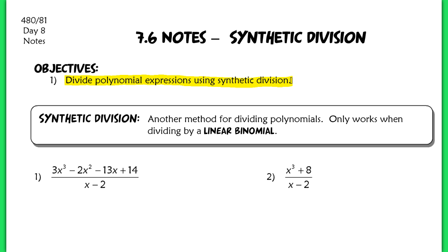You're really going to like synthetic division — you're definitely going to like it more than long division. But the problem is it doesn't always work. It only works when we divide by a linear binomial. In our first example, we can use synthetic division because this is a linear binomial, meaning we have a term that is to the first degree, which makes it linear.